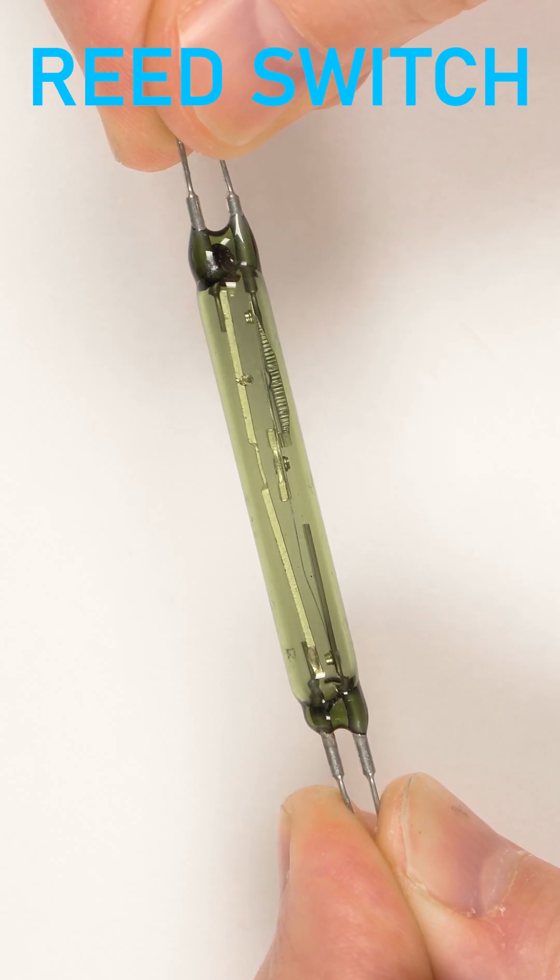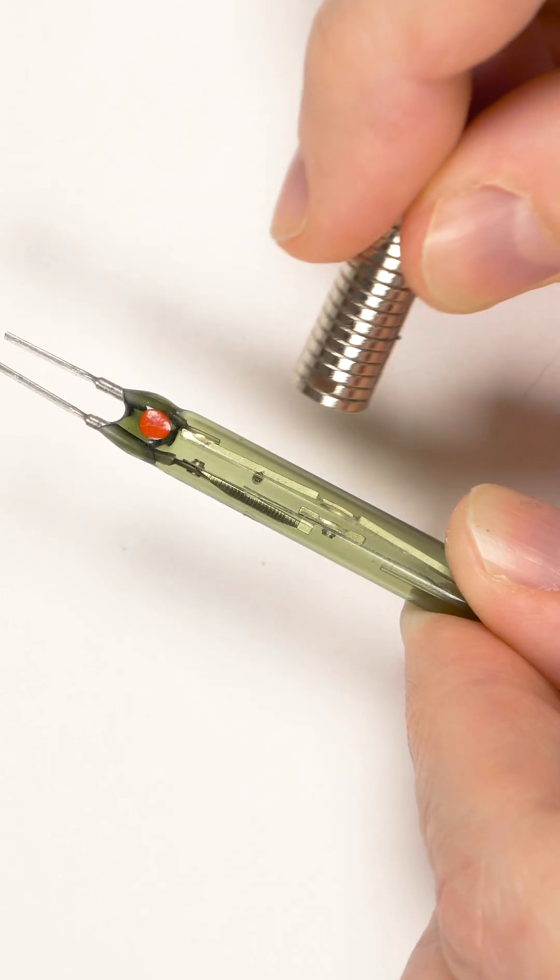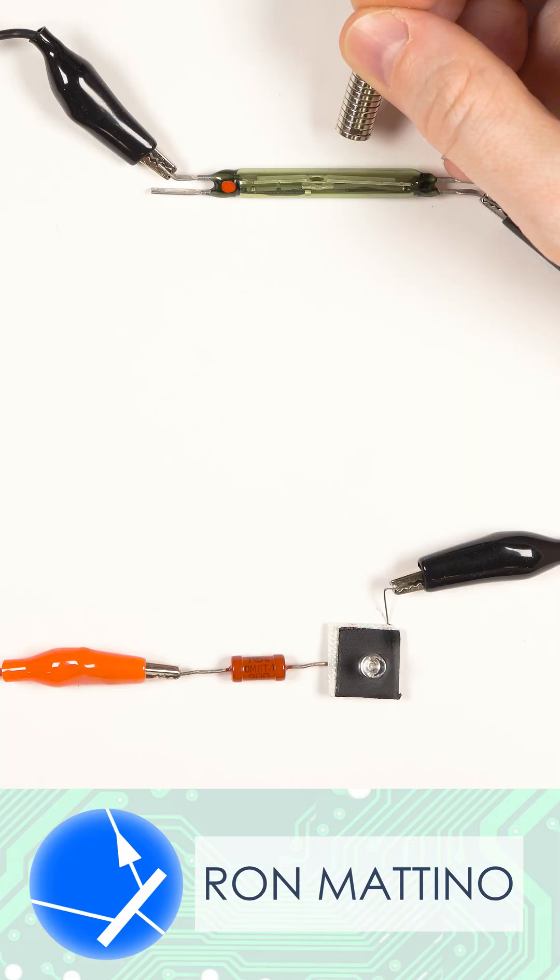A reed switch is a hermetically sealed electromechanical switch operated by a magnetic field. If we apply a magnet, we can see the contacts short and form a circuit.